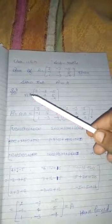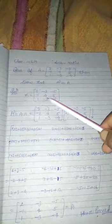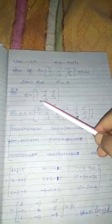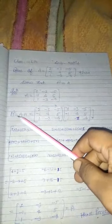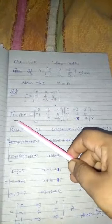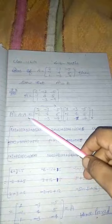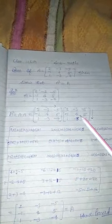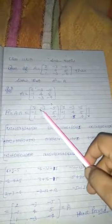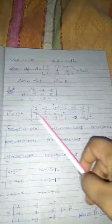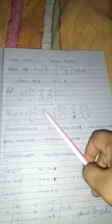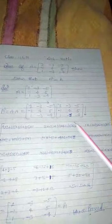Solution: A is equal to [2, -3, -5; -1, 4, 5; 1, -3, -4]. Let us find A squared, that is A into A. Now we multiply first row with first column, first row with second column, first row with third column. Similarly for the second and third rows.